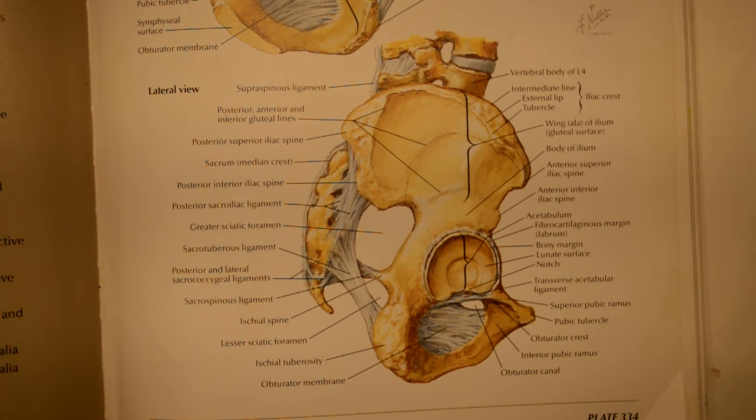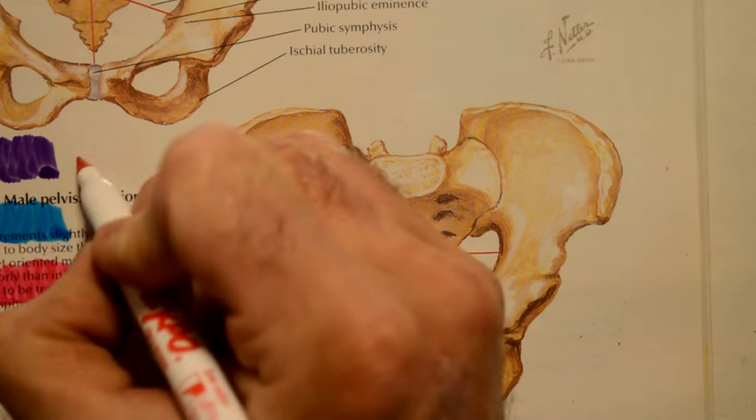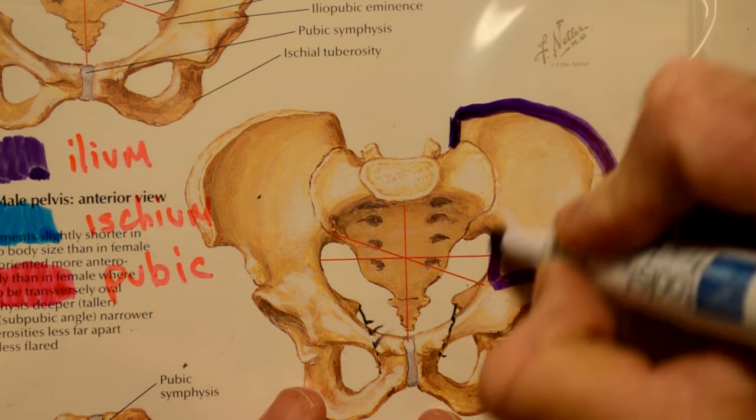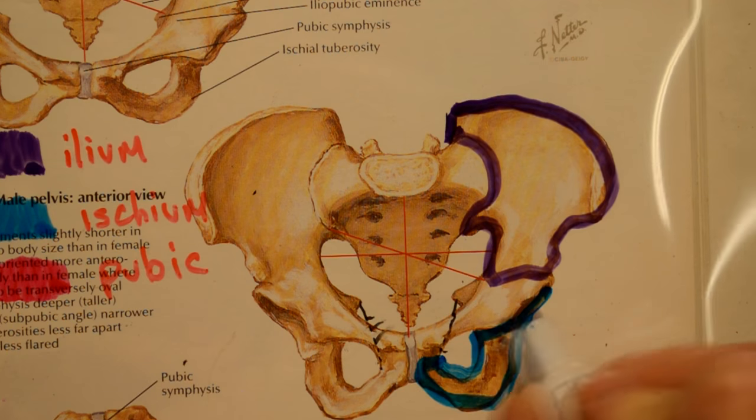This is what it looks like from the front. It's also made up of three different bones, and I know it doesn't look like it, but they're fused together. These are called the ilium, the ischium, and the pubic bone.